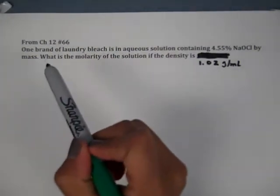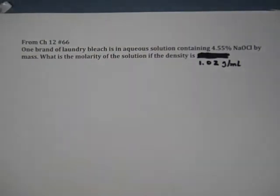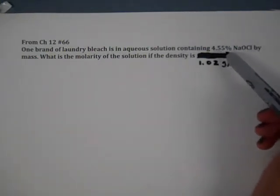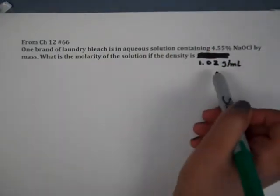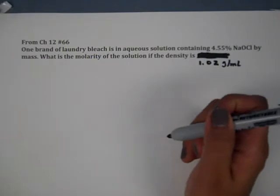The first problem from chapter 12 is number 66, and it's talking about a laundry bleach solution that is 4.55% NaOCl by mass. And it wants to know the molarity if the density is 1.02 grams per milliliter.